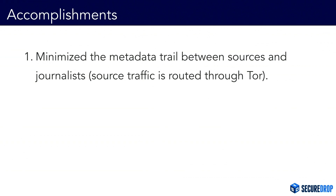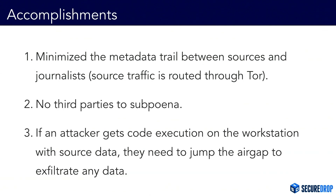So what have we accomplished? We've minimized the metadata trail — the source is using Tor, so they're not directly emailing or calling journalists like in the Risen and Sterling case. There's no third party to subpoena. If there's anybody to subpoena, it requires a court order sent directly to the news organization for the keys to decrypt the on-prem documents, which involves significantly more political cost, and the news organization would learn about it and can fight in the legal system. And finally, if an attacker gets code execution via malicious documents, they need to jump the air gap to exfiltrate any data.